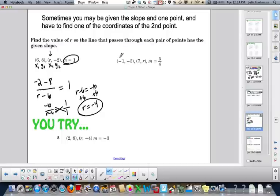And our last example, here's x1, y1, x2, and y2. So y2, which is r, minus y1, which is negative 3, over x2, which is 7, minus x1, which is negative 1. r minus a negative 3 is r plus 3. 7 minus a negative 1 is 7 plus 1. You want that slope to be 3 fourths.